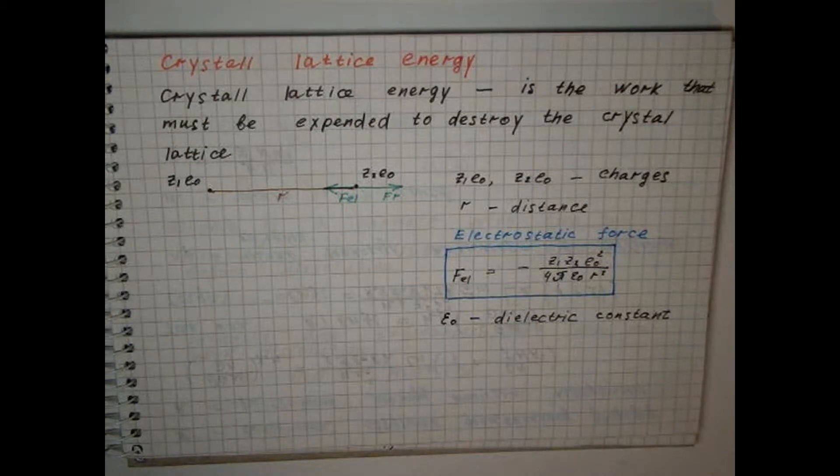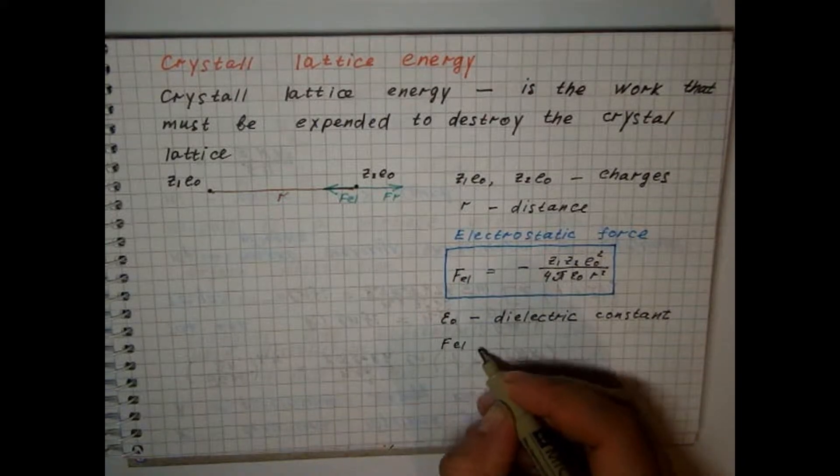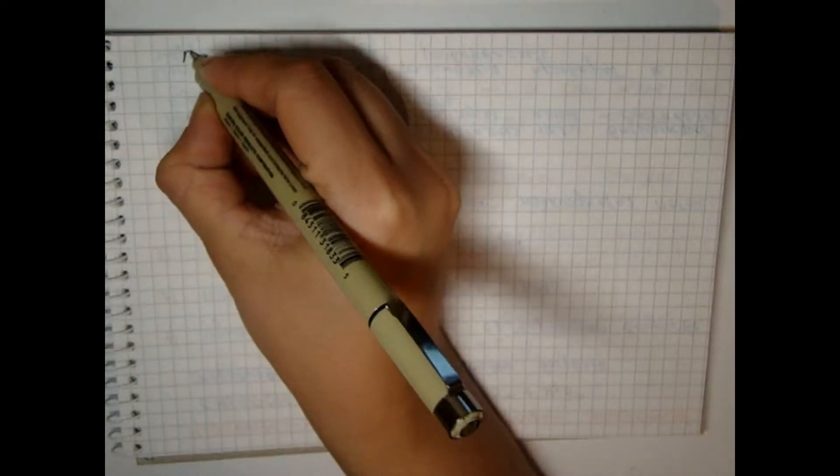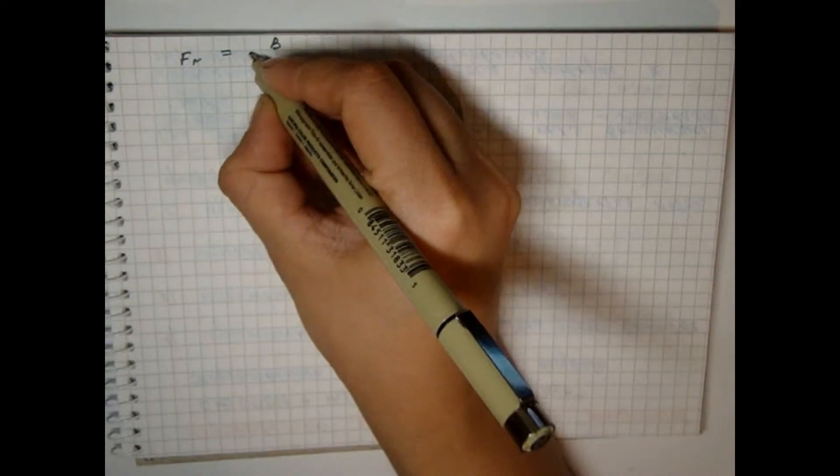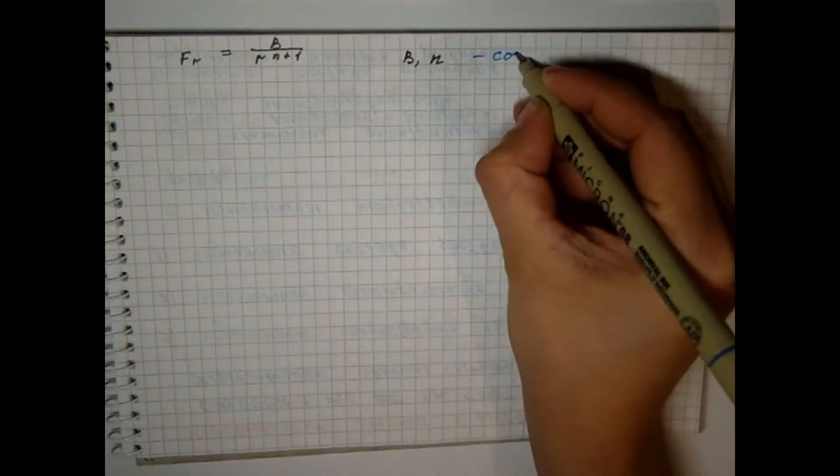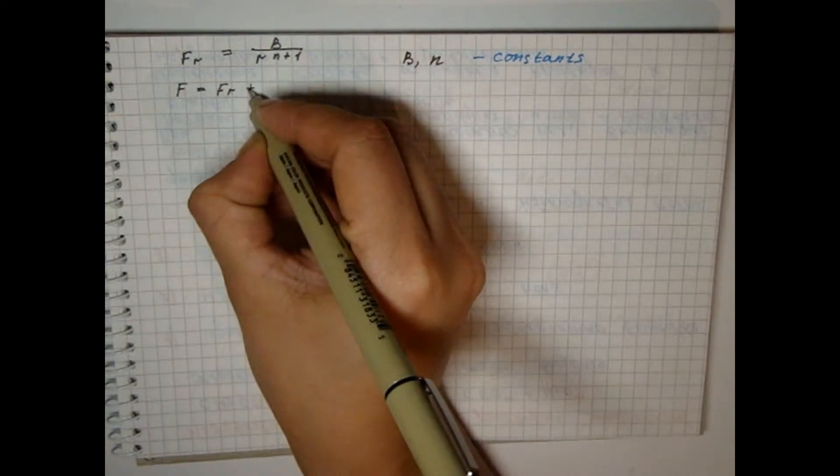Suppose that a repulsive force is also applied to the second ion. It will be greater than zero since its direction coincides with the direction of the axis. It can be represented as, the total ion interaction strength will be as follows.